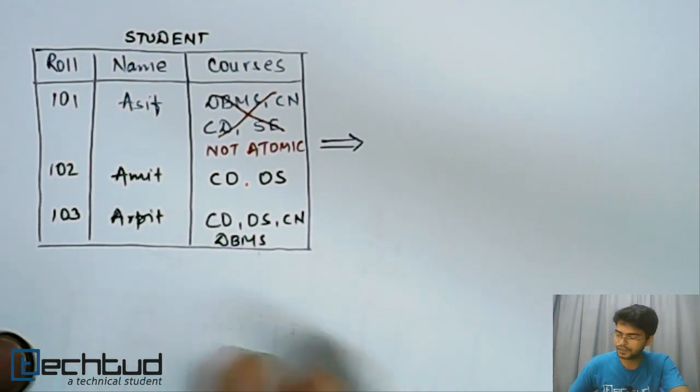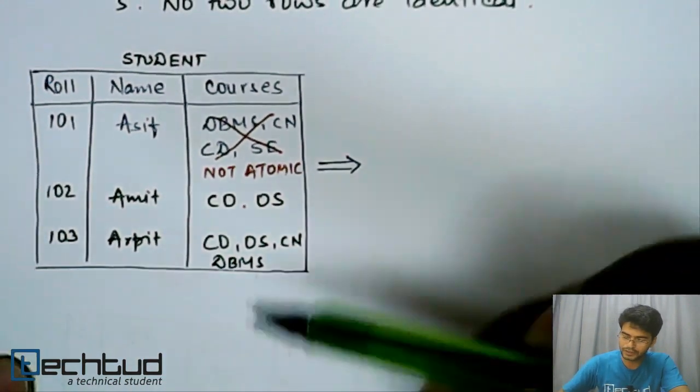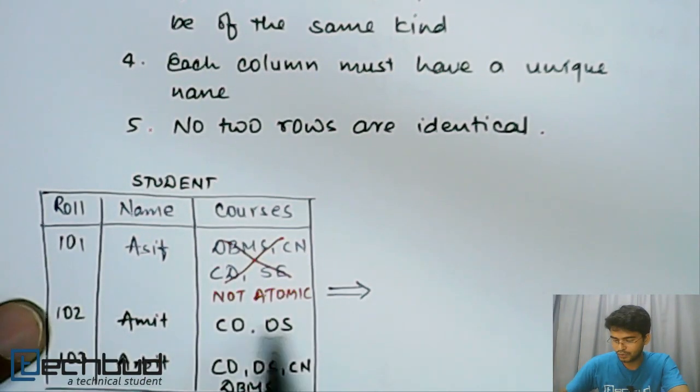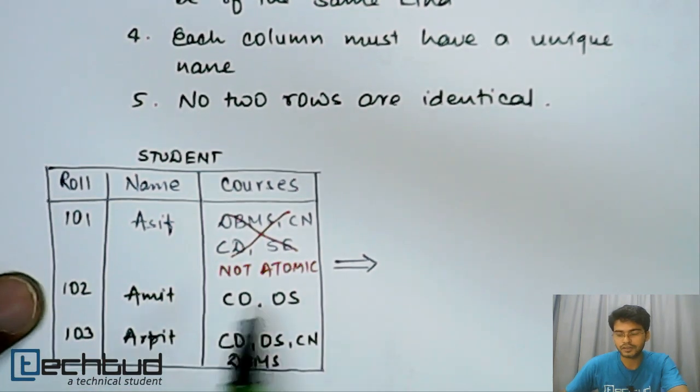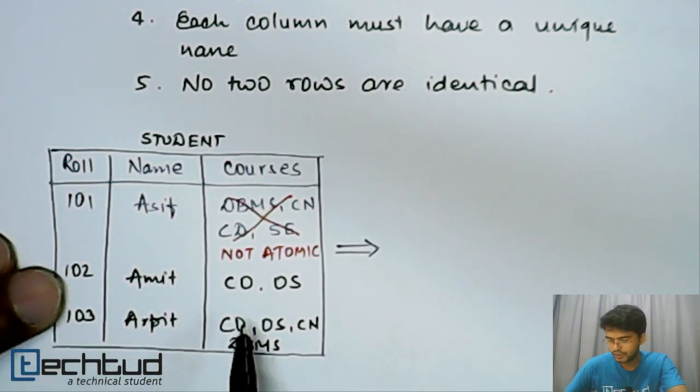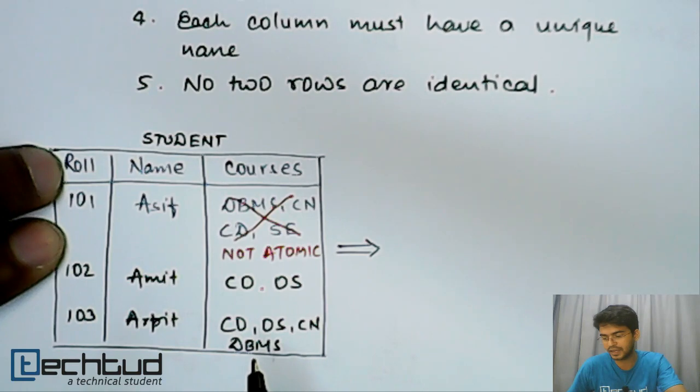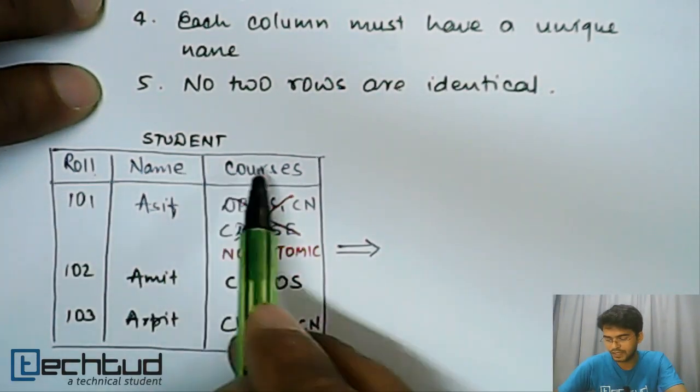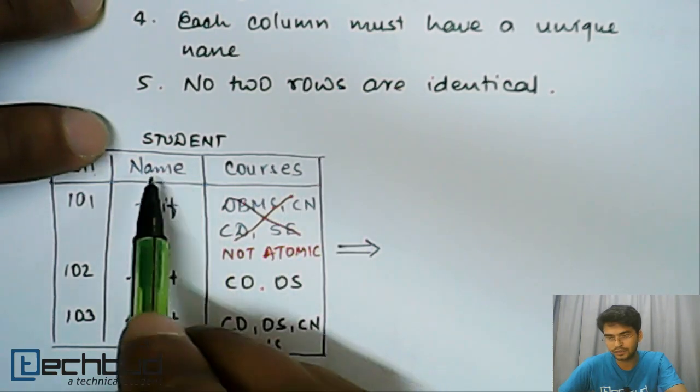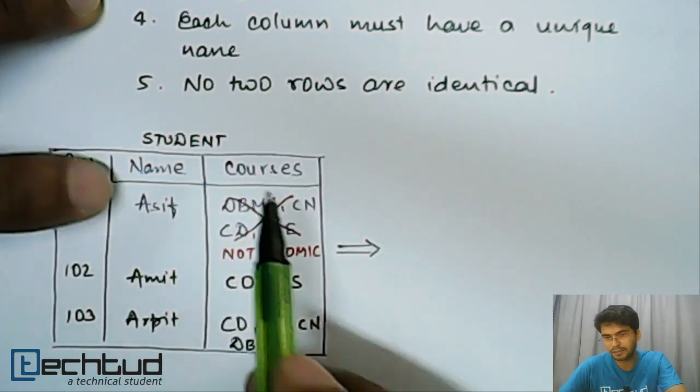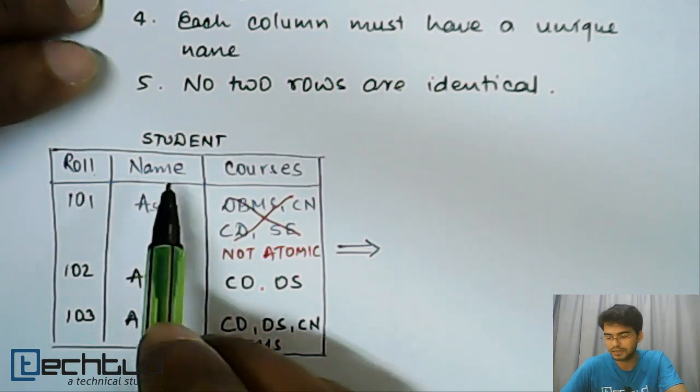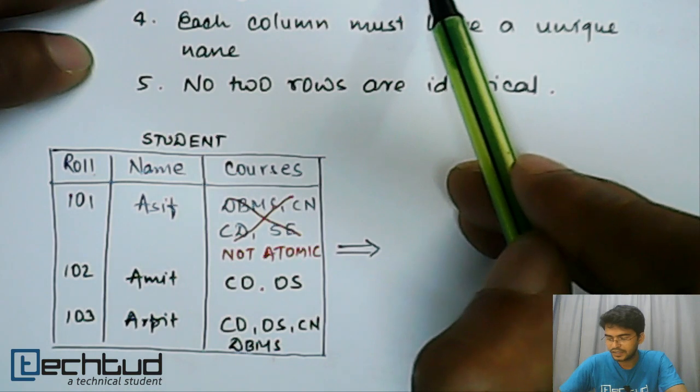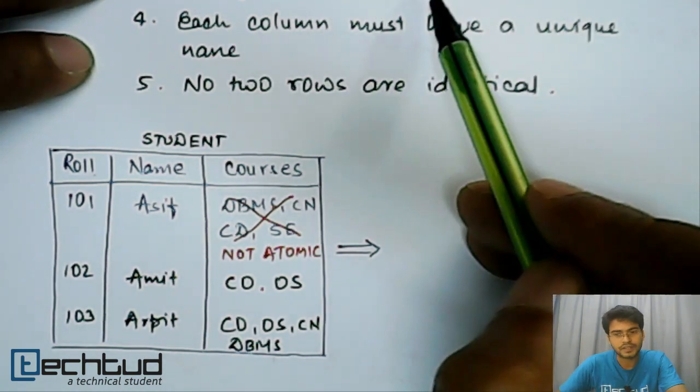Now we will do some modifications. Apart from this, all criteria are satisfied, that is no two rows are identical. This is a row, that is a record information about a student. So no two information are same. Each column must have unique names. So column names are unique, fine? There are no two columns having, let's say, name name, two columns there with the same name. It's not the case here.